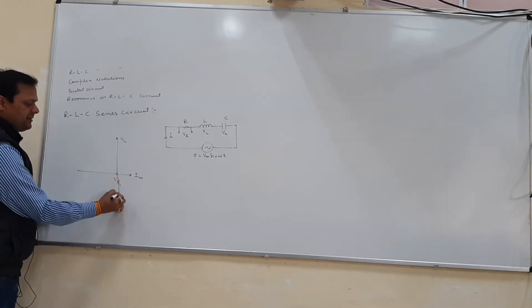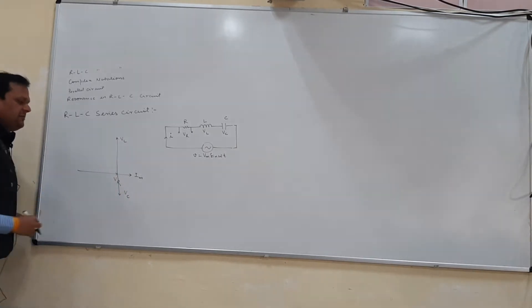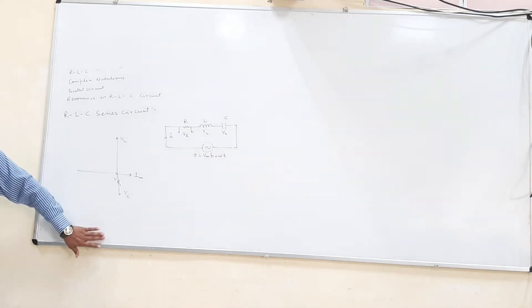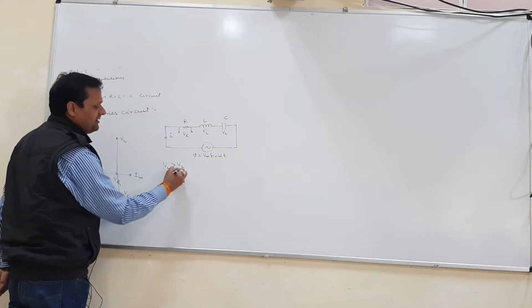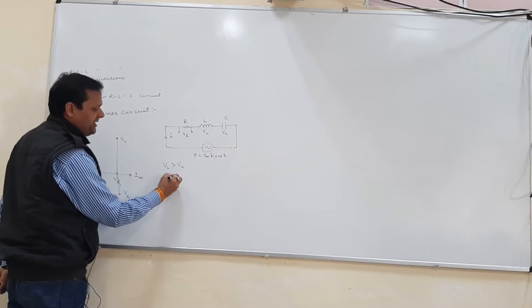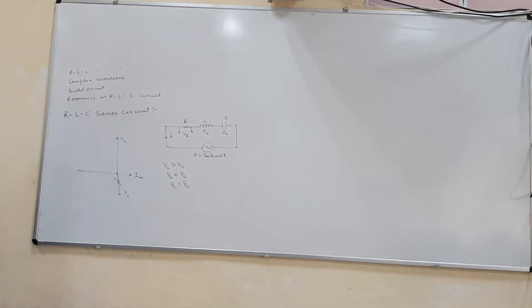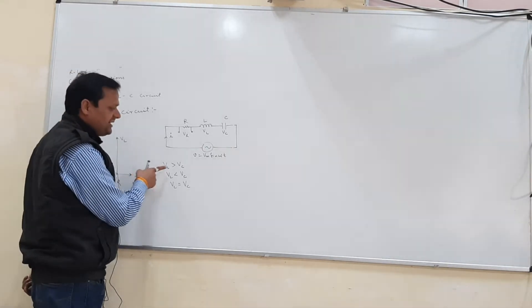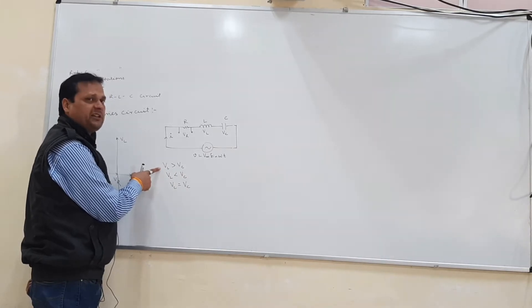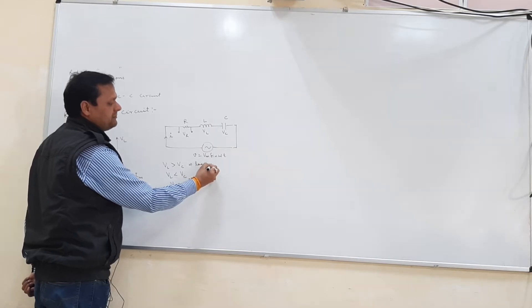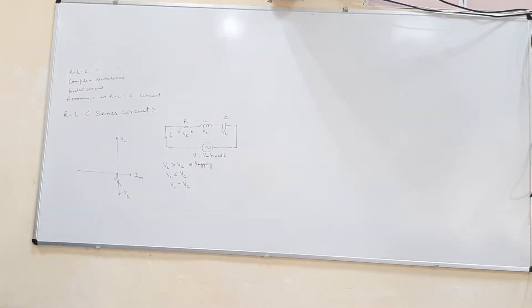Similarly for Vc — Vc is drawn downward. There are three possibilities: Vl can be greater than Vc, Vl can be less than Vc, or Vl equals Vc. If the circuit has Vl greater than Vc, it means the inductive reactance is dominating, so the current would be lagging — the circuit is inductive.